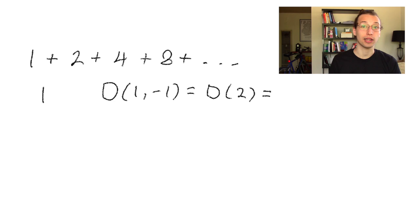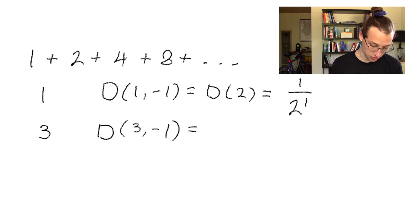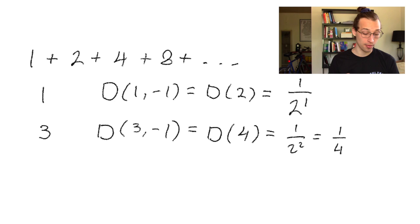Our next truncated sum is just 3, and the distance from 3 to negative 1, using the 2-adic metric, is just the size of 4. And 2 goes into 4 two times, so this is equal to 1 over 2 squared, or just a fourth. And you may be starting to see the parallel between this and the sum of all negative powers of 2. Just to go one step further, let's look at the truncated sum of 1 plus 2 plus 4. This is 7.